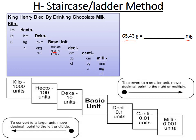Here's another practice problem: convert 65.43 grams to milligrams. The base unit is the gram and we're going down to milligrams — that's three steps down the staircase. Going down means we move the decimal to the right three spaces. Starting with 65.43, moving three spaces right gives 65,430.0 milligrams.